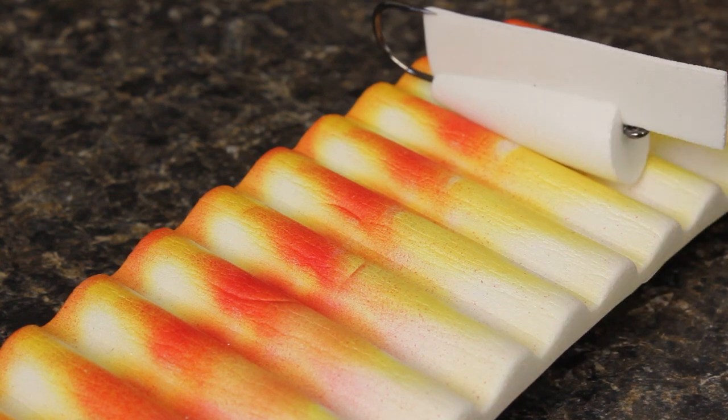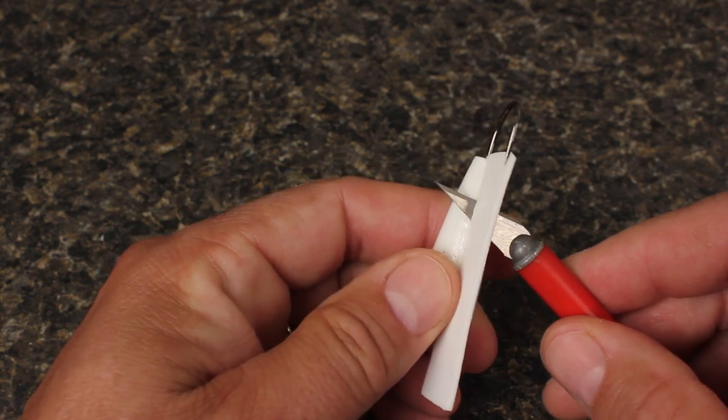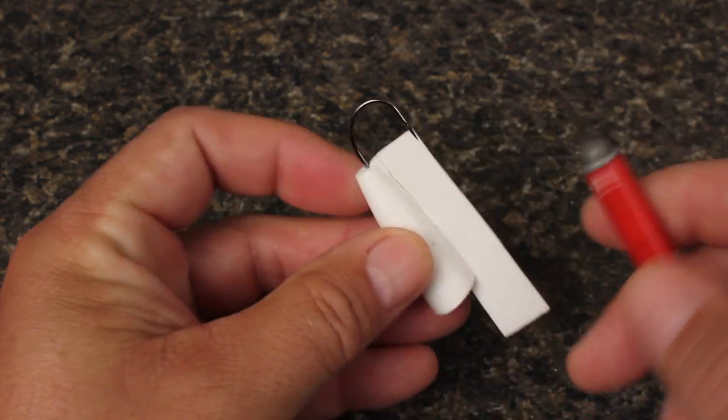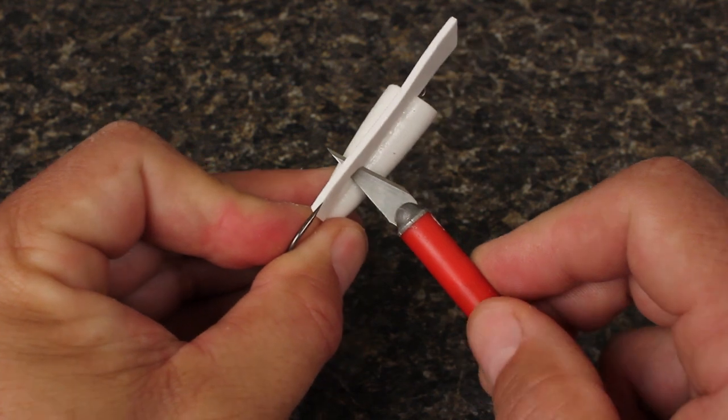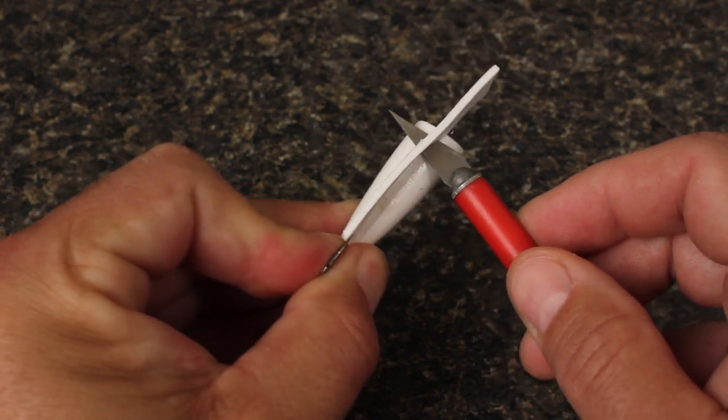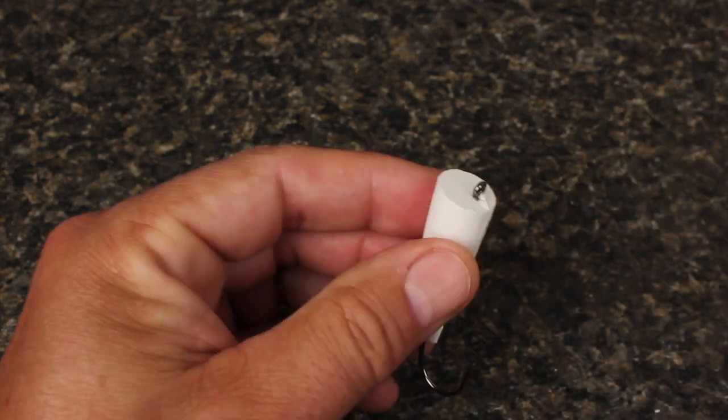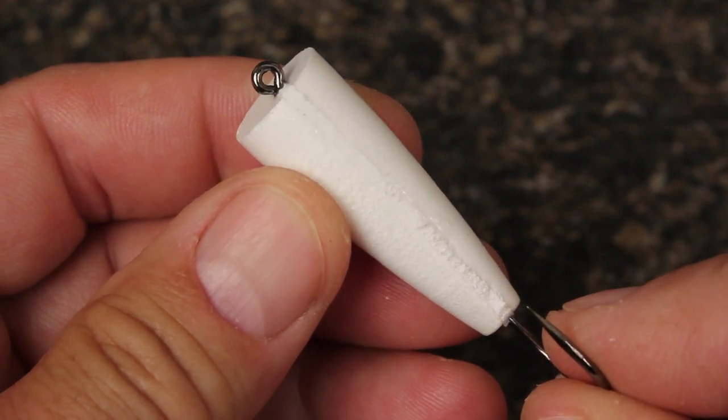When the epoxy is dried, use a hobby knife with a fresh blade to remove the excess foam. Be very careful doing this. It's easy to cut yourself with a knife as well as stab yourself with a hook. Get as much foam removed with a knife as you can. Now here's a cool little trick to really seal up the craft foam.